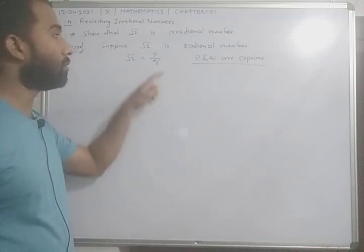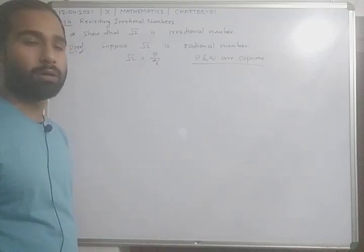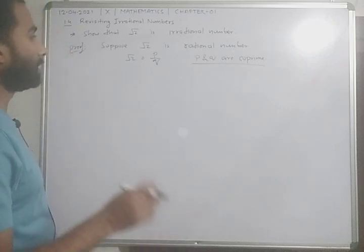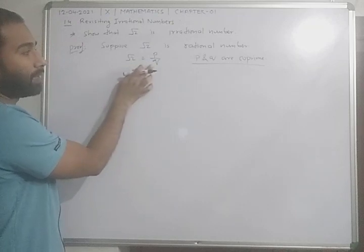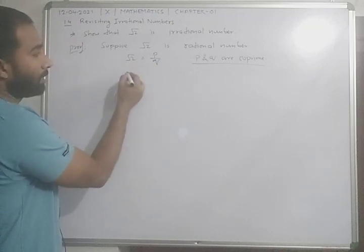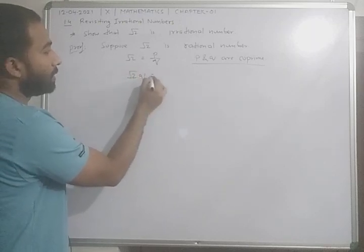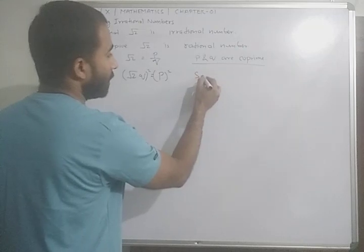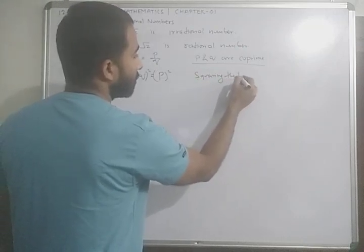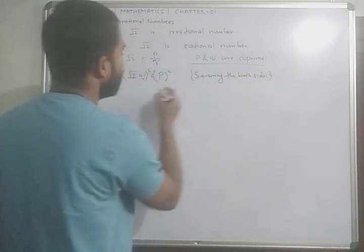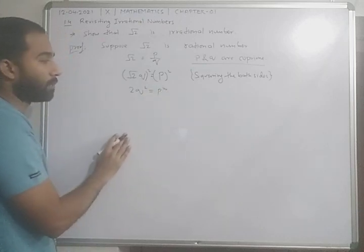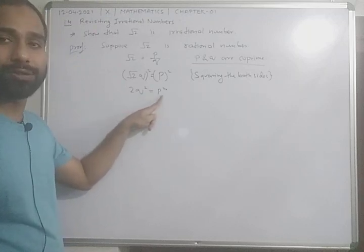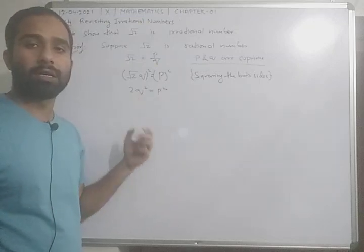This is a very important part. We need to consider P and Q as co-primes, and regarding this statement we will arrive at a contradiction. Now, you can transpose the variable Q, so we can write in the next step: root 2 times Q is equal to P. Now, squaring both sides, we get 2Q squared is equal to P squared. You can see that if you transpose 2 from left to right, then 2 divides P squared.